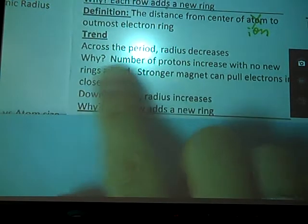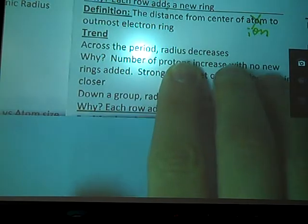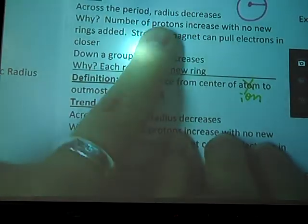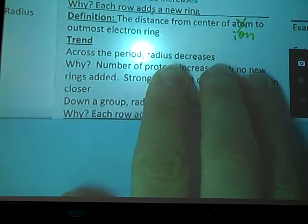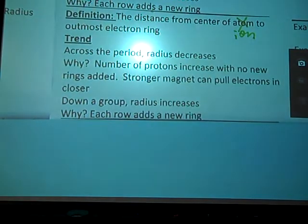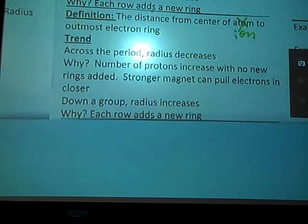As we go across the period, radius decreases. Hey, look there. Same thing happens. Why? Because as per usual, as we go across the period I am getting a bigger magnet. Bigger magnet, better pull, smaller atom, smaller ion. Down a group my radius increases. Why? Because I am adding rings, just like our atomic radius.